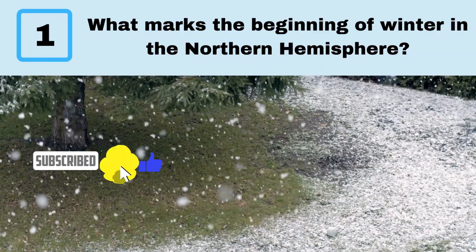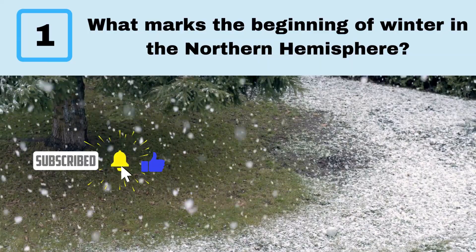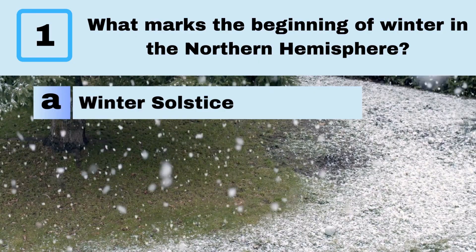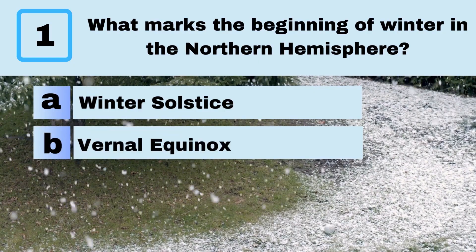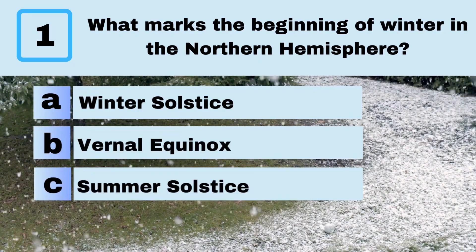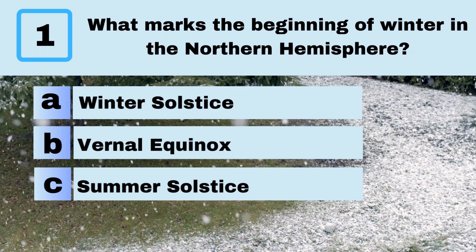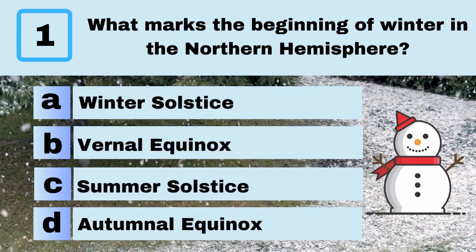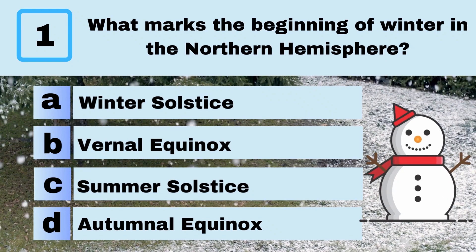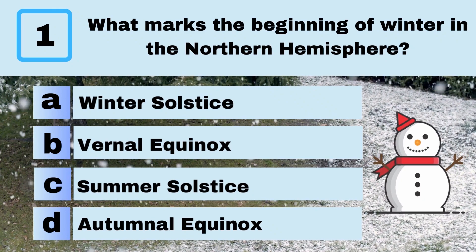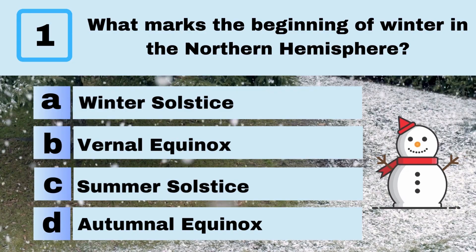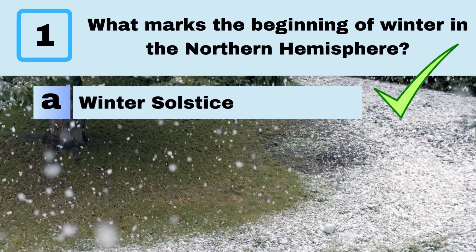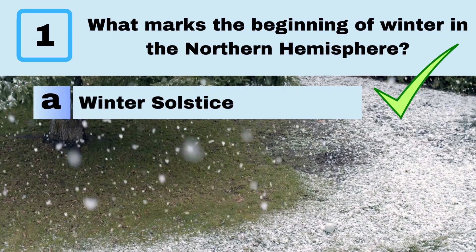Question 1. What marks the beginning of winter in the Northern Hemisphere? A. Winter solstice. B. Vernal equinox. C. Summer solstice. D. Autumnal equinox. Answer: A. Winter solstice.